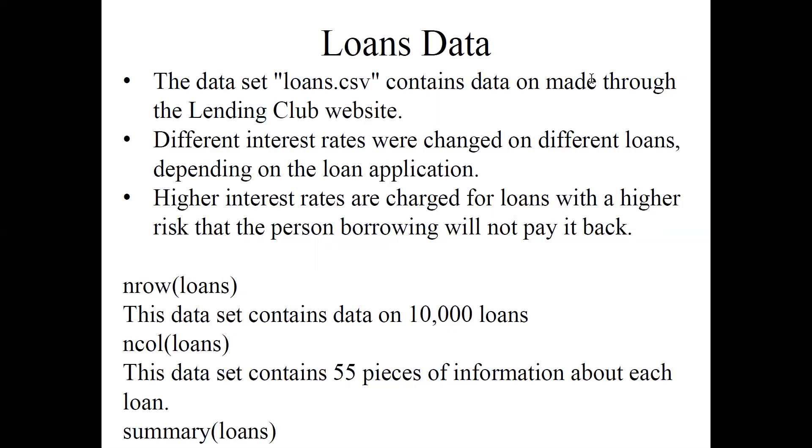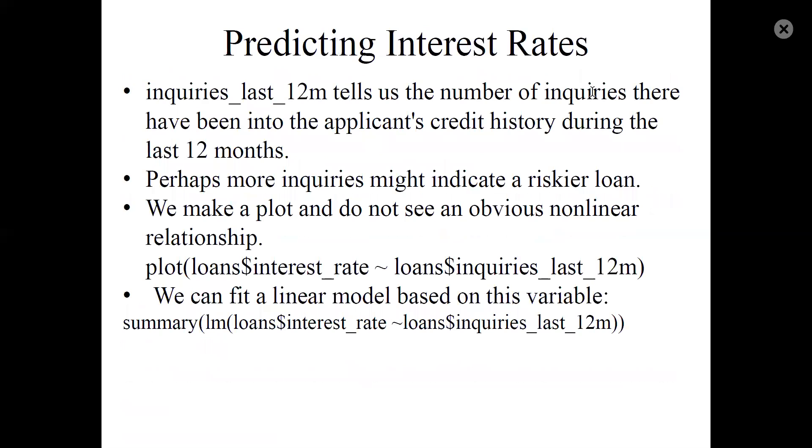The first thing we want to do is probably run a summary command on it and start looking through each of these 55 columns to get a sense of what's going on. Let's consider interest rates as our response variable and see if we can predict what the interest rate is likely to be given various aspects of the loan.